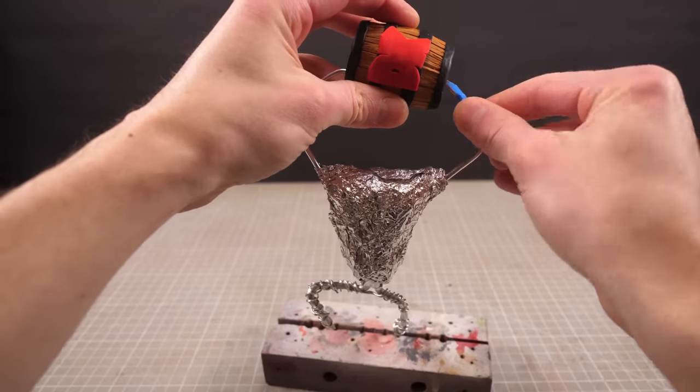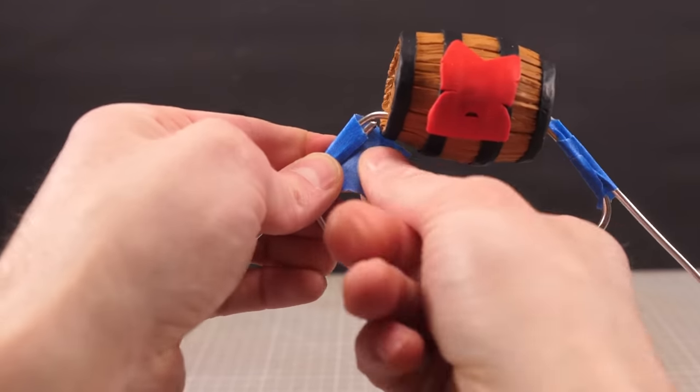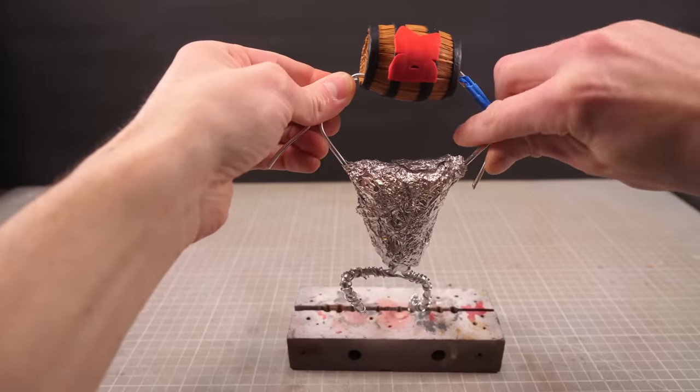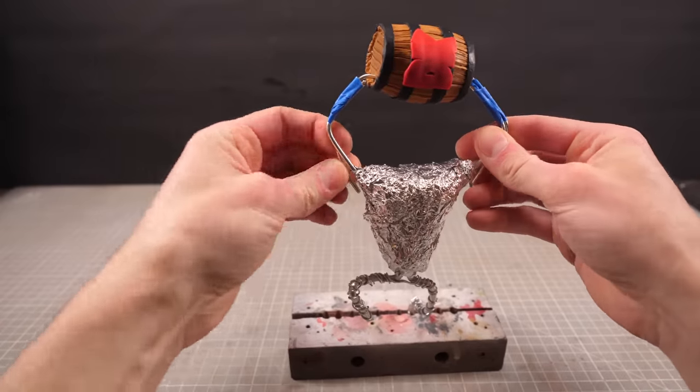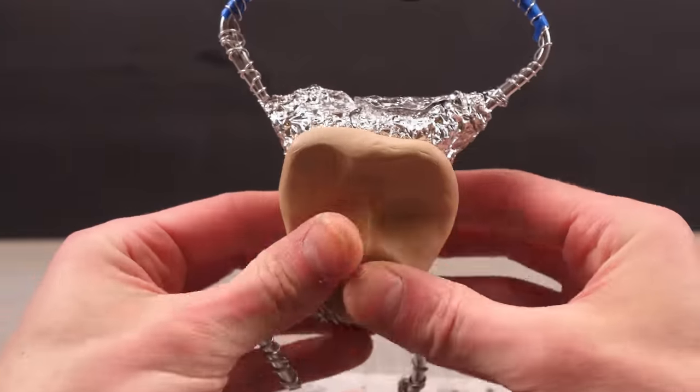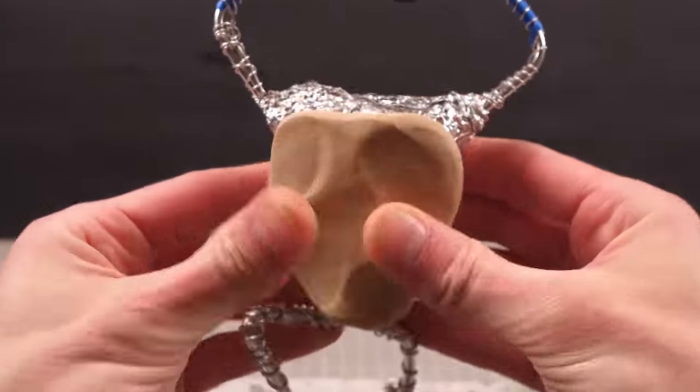I want Donkey Kong to be holding the barrel above his head as if he's about to smash it onto his opponent, and making it first means I can more easily add the hands later. Otherwise, with the barrel in place, I can start to slap on the layer of ape flesh-colored clay.